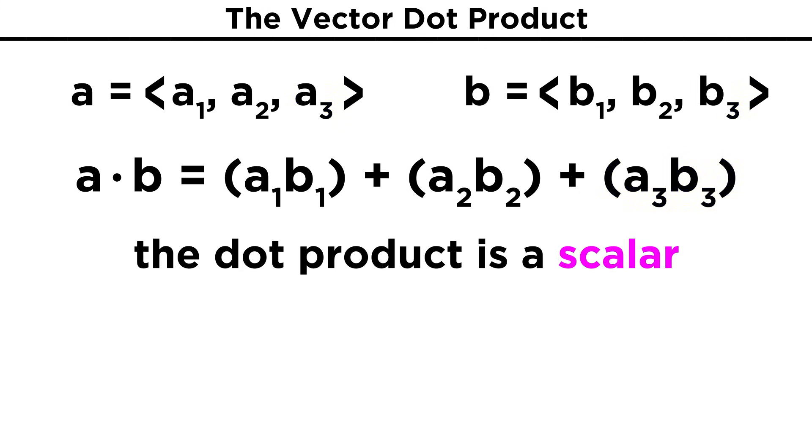It is very important to note that this is a scalar product. The dot product does not give us another vector. It takes two vectors as an input, and gives us one number as an output.